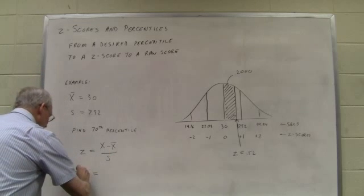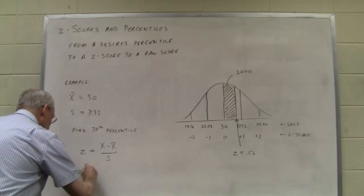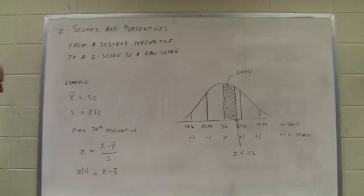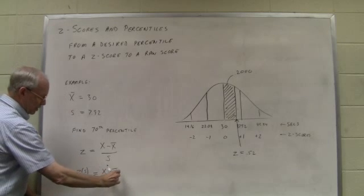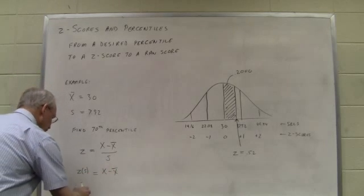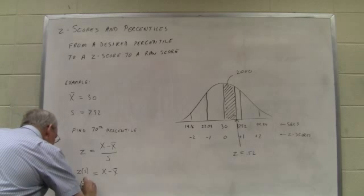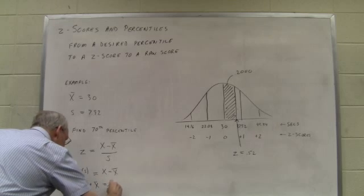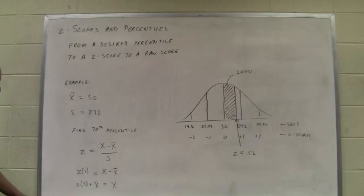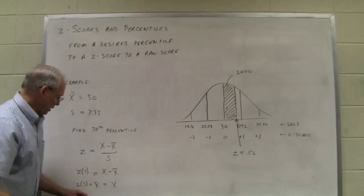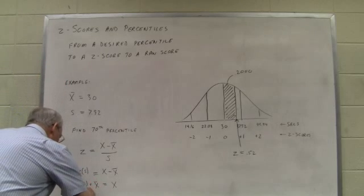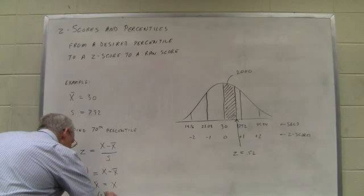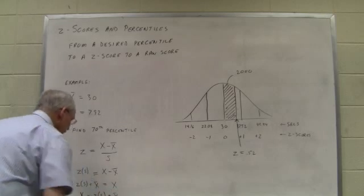If we multiply both sides by s, we get rid of the denominator over here. Since we want to isolate x on one side, if we add the mean to both sides, we accomplish that isolation. Now I'm just going to reverse left to right because we are solving for x. So x equals z times the standard deviation plus the mean.